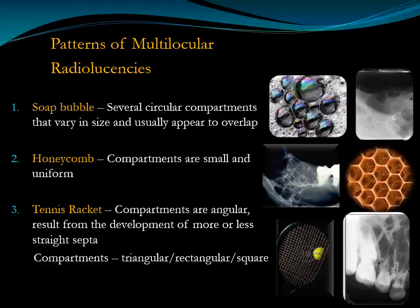In the soap bubble pattern, you can see a small circle here and a large radiolucent circle there — that is soap bubble appearance. In the honeycomb pattern, the radiolucent compartments are usually uniform in size — not exactly, but almost uniform in size. That is called honeycomb pattern.